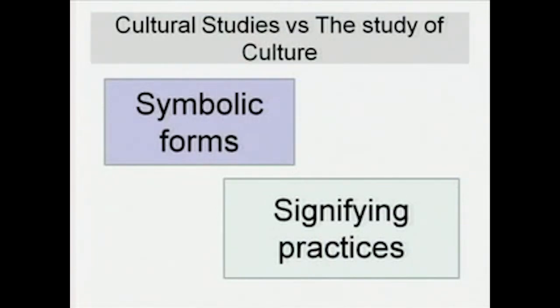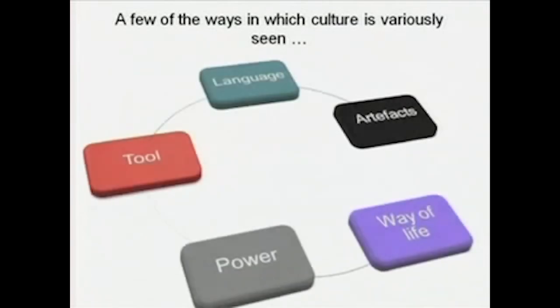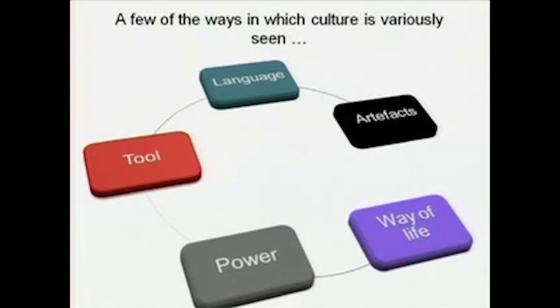We also saw that we need to make a difference between cultural studies and the study of culture. The study of culture may safely be said to do with the older ways of doing anthropology, whereas cultural studies is to do with symbolic forms and their signifying practices. A few of the ways in which culture is variously seen: culture is a tool through which we find our way in our social and cultural lives; culture is a language; culture refers to artifacts; culture is a way of life; and culture is deeply imbued with power. These are the various ways in which we shall be looking at culture in our course, cultural studies.